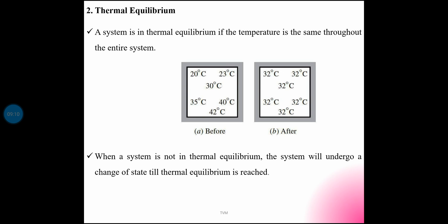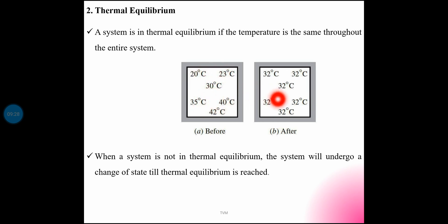If the system is not in thermal equilibrium, the system will undergo a change of state until thermal equilibrium is reached. Initially, one location may have one temperature. Over time, the system internally adjusts — heat transfers from the higher temperature region to the lower temperature region until a uniform temperature state is attained.